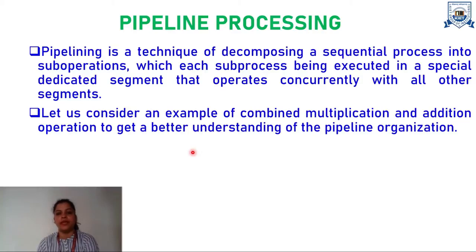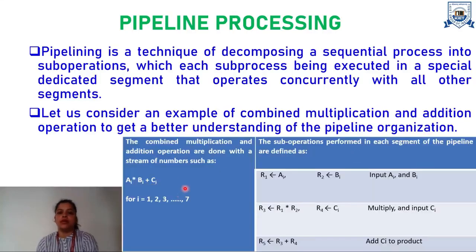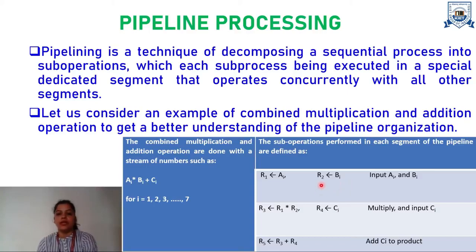Consider an example of combined multiplication and addition operation to get a better understanding of the pipeline organization. This combined operation gets divided into sub-operations in each segment of the pipeline. To perform multiplication, we need two operands A and B, so we need to transfer these inputs into registers. The content of A is transferred into R1 register, whereas B is transferred into R2 register. After which, in another segment, the multiplication operation is performed: the content stored in R1 and R2 registers are multiplied and the result is stored in R3 register.